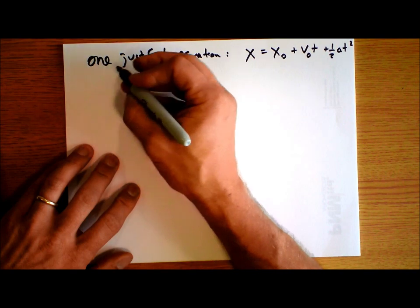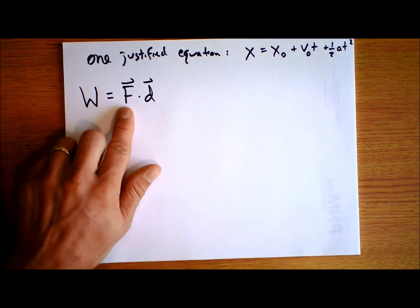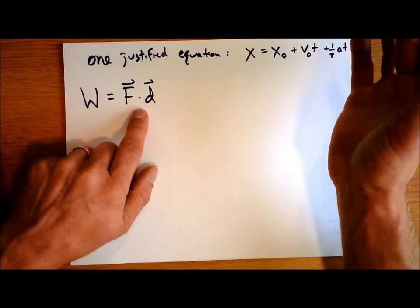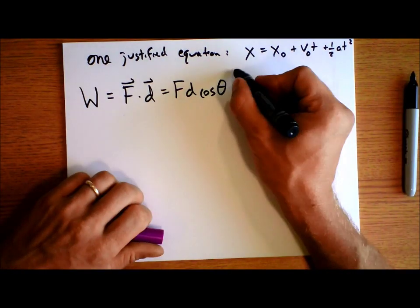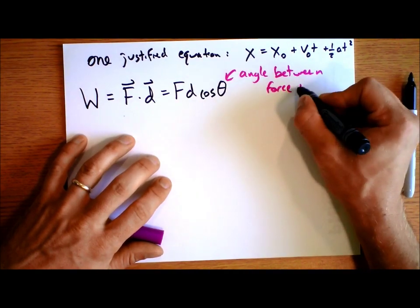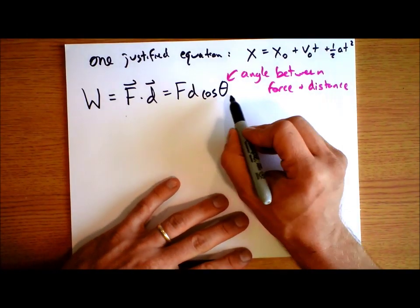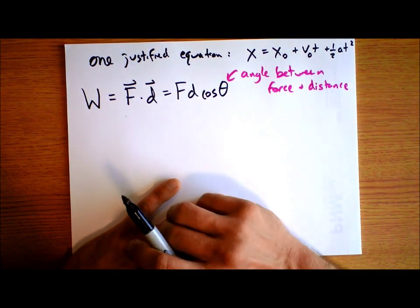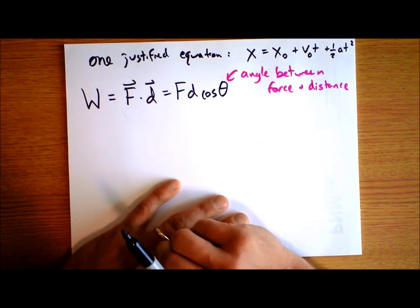Last year I told you that work is force dot distance — work is done when a force acts in the direction that something moves. The dot product has a cosine in it: force times distance times cosine of the angle between force and distance. For instance, the magnetic force QV cross B — the force on a charge moving in a magnetic field — can never do any work because it's a cross product; the force is always at a right angle to the velocity, and therefore to the distance traveled.